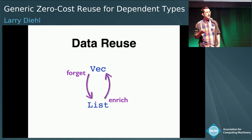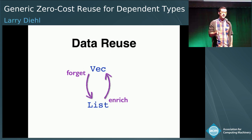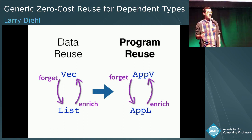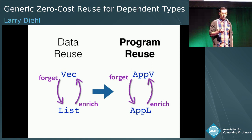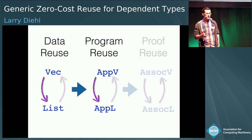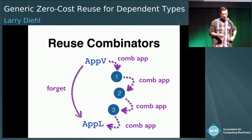By data reuse, we mean if we have a vector value, we want to translate it to a list value in the forgetful direction, and we also want to translate a list value to a vector value in the enriching direction. By program reuse, we mean the same thing for functions—for example, going back and forth between the vector append function and the list append function. And for proof reuse, the same thing for proofs—say the proof of vector append associativity and the proof of list append associativity. In this talk, we'll restrict ourselves to data and program reuse, and only in the forgetful direction.